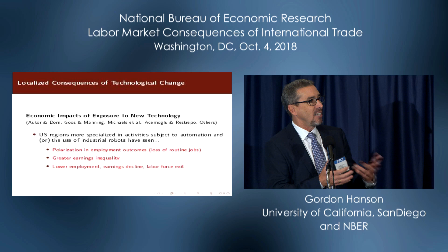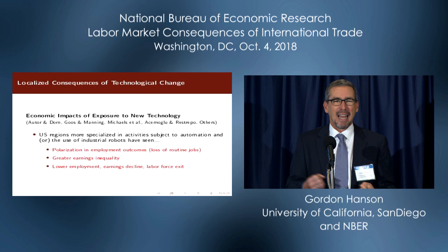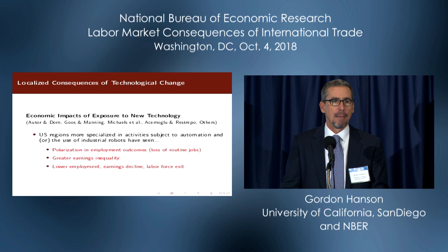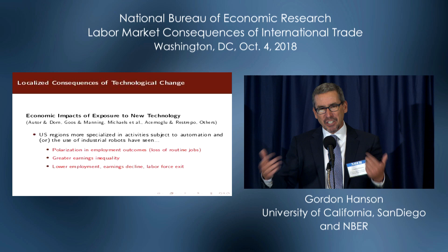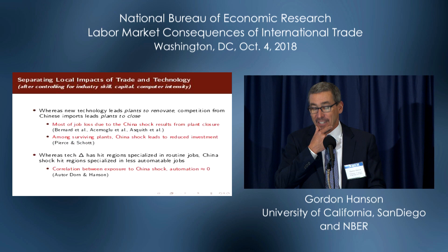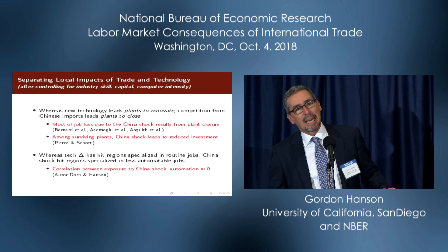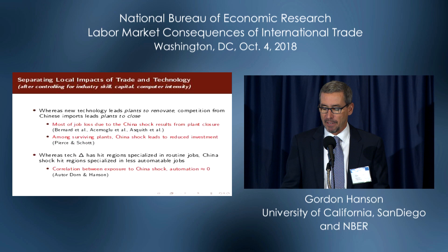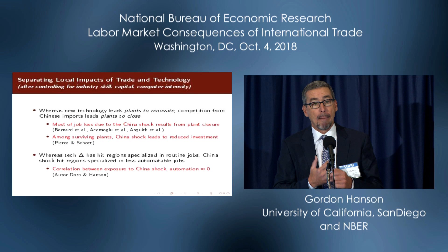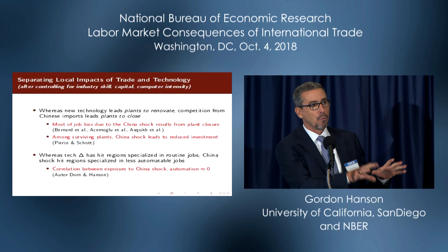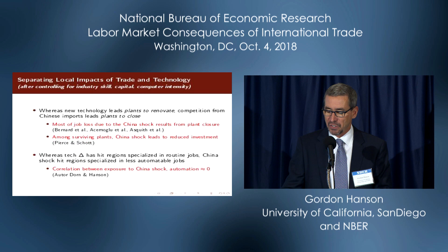We've got these two things going on which the empirical literature has documented. This work is all reduced form, so it's not well suited to adding them up and telling us about the general equilibrium impacts. But in this context, how do we tell the difference between trade and technology? In all of this work, if you're trying to understand the exposure of a region to trade, you want to control for all the things we learned about in decades past about what makes particular industries more prone to the adoption of labor-saving technology — how specialized industries are in computers, in capital, in skilled workers — and you're controlling for regional specialization in those activities. All of this work already has those sets of controls, and that absorbs a lot of this exposure.